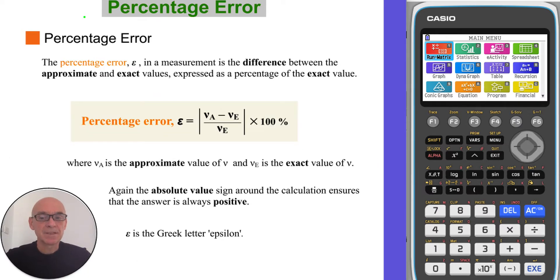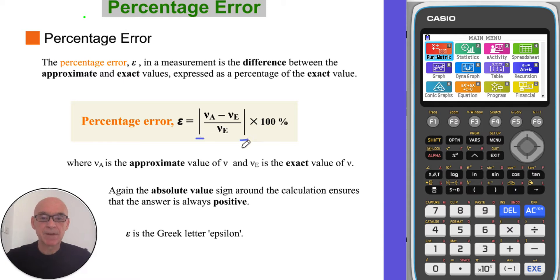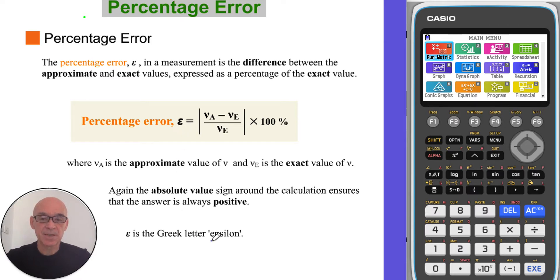The percentage error in a measurement is the difference between the approximate and the exact values expressed as a percentage of the exact value. Again, the absolute value signs around the calculation ensure that the answer is always positive. The percentage error is given the symbol E, where E is the Greek letter Epsilon.